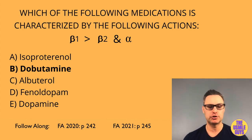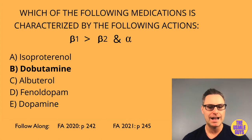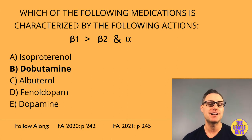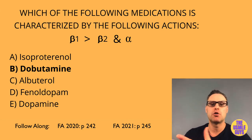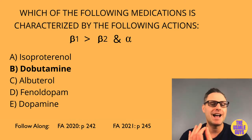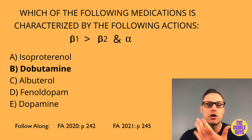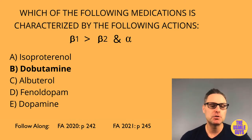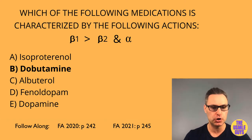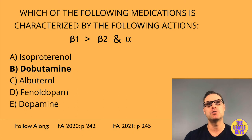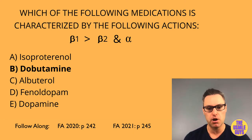Albuterol, along with salmeterol and terbutaline, have stronger beta-2 than beta-1 action. Albuterol is used for acute asthma attacks and COPD. Salmeterol is used for long-term control of asthma and COPD. Terbutaline is used in asthmatics experiencing an acute bronchospasm.